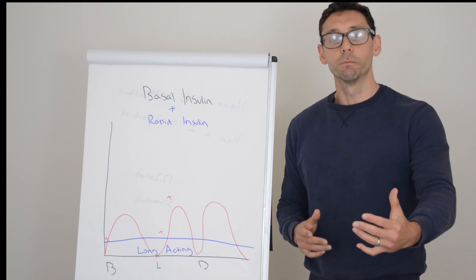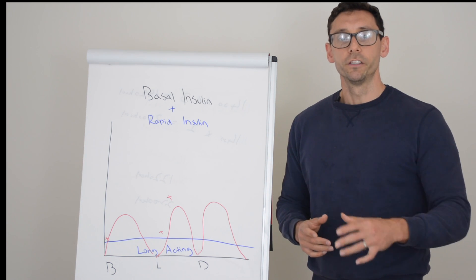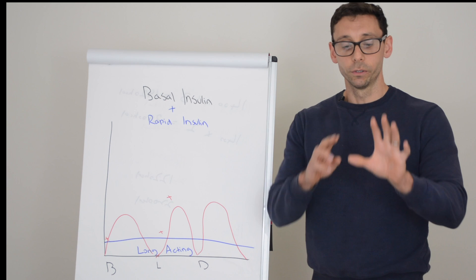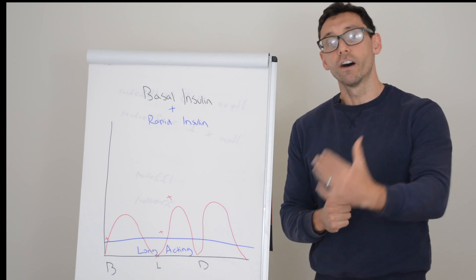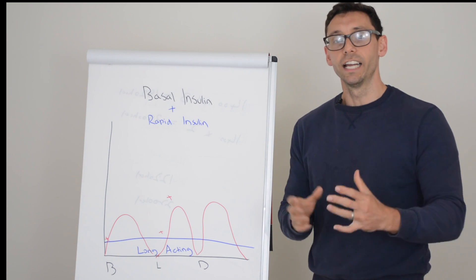So if you had 50 grams of carbohydrate at your meal, you've had five sets of 10, and therefore you would take five units because it's one for 10 at that meal.